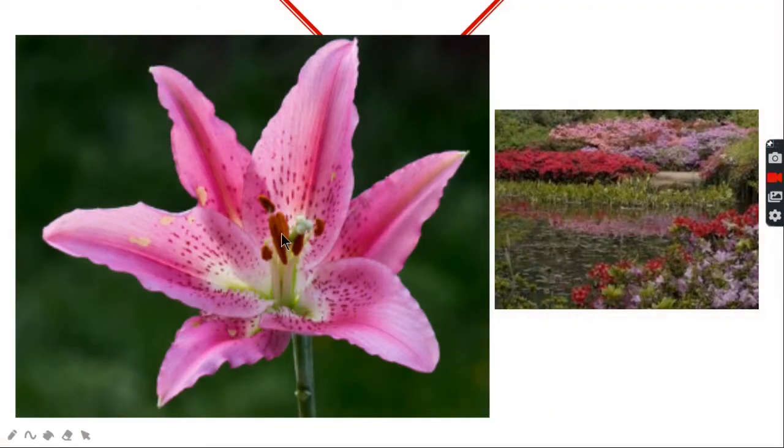Whenever pollen grains are mature inside the anther of a flower, these pollen grains are released. They can either fall on the stigma of the same flower or they can fall on the stigma of some other flower and this process is called self-pollination or cross-pollination.